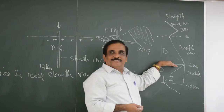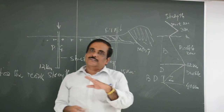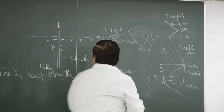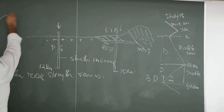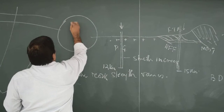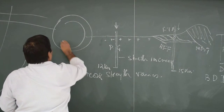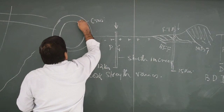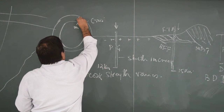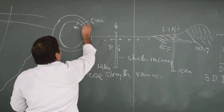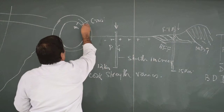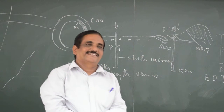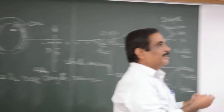So this 12 kilometer depth is the beginning of the ductile zone. This layer exists all around the Earth. So once you reach 12 kilometers, you come to this ductile zone.